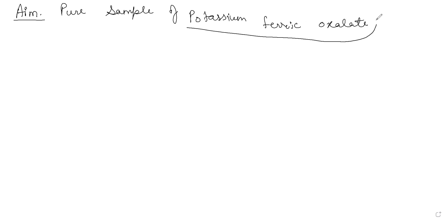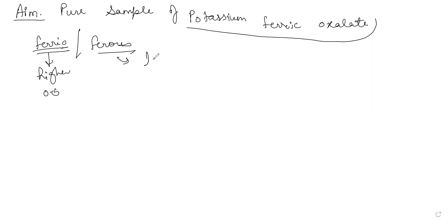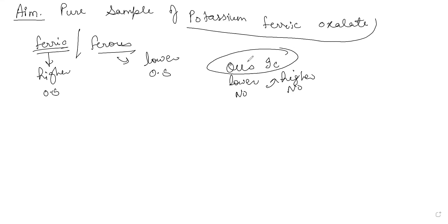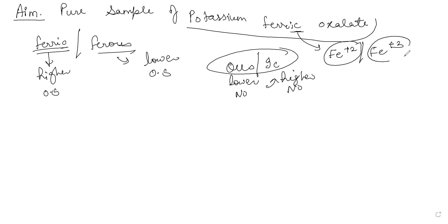You all know what potassium is. Now, some students are not clear about what ferric and ferrous mean. Ferric means a higher oxidation state, and ferrous means a lower oxidation state. You can learn it this way: 'us' and 'ic' — going from a lower number to a higher number. Fe exists either as Fe²⁺ (ferrous) or Fe³⁺ (ferric).